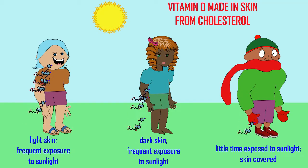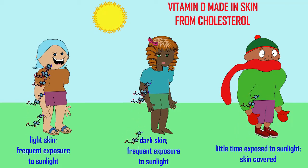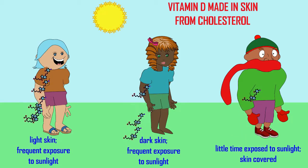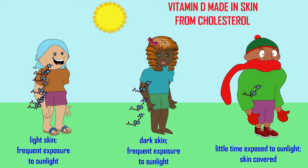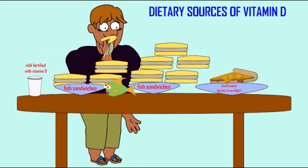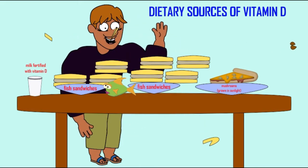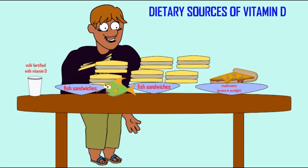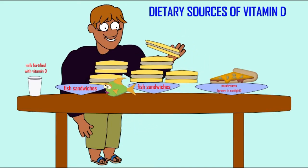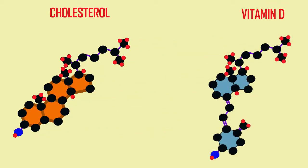However, if one lives farther from the equator where there is less sunlight, and perhaps a greater difference in the amount of sunlight across seasons, then darker skin would limit the amount of vitamin D made in the skin. While it is possible to get vitamin D from one's diet, most individuals do not get enough from diet alone. Therefore, a major source of vitamin D is sunlight hitting the skin, where cholesterol is converted into vitamin D.